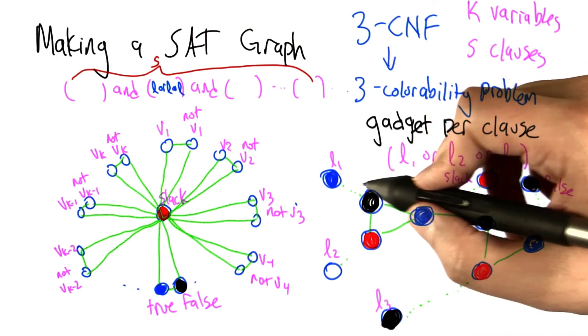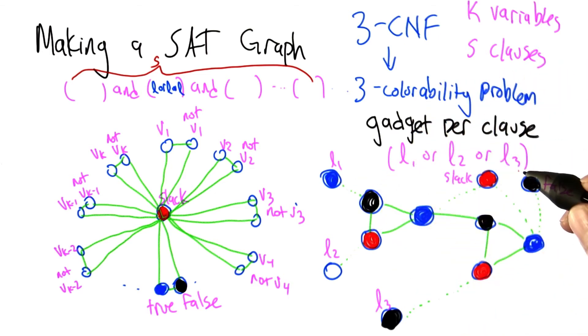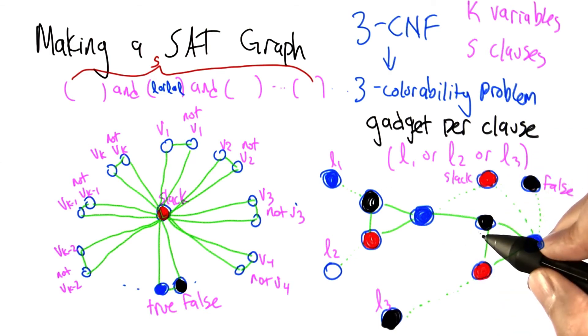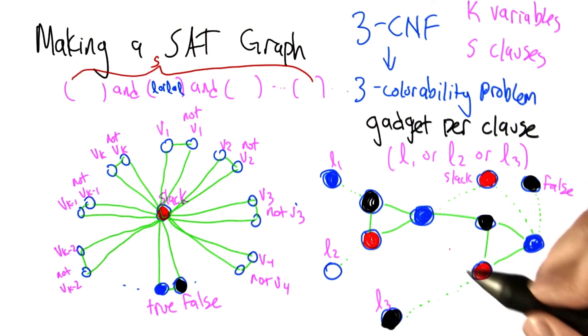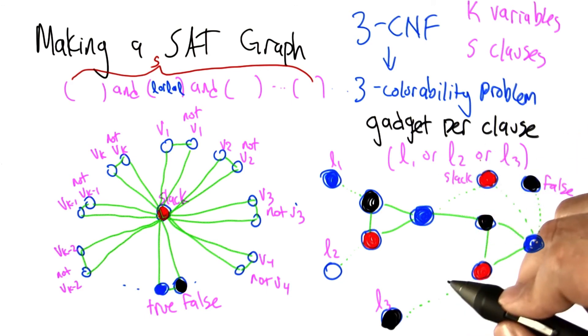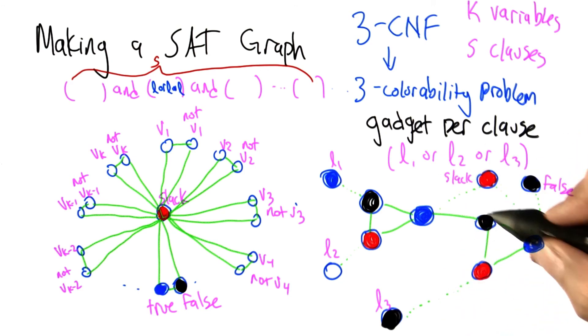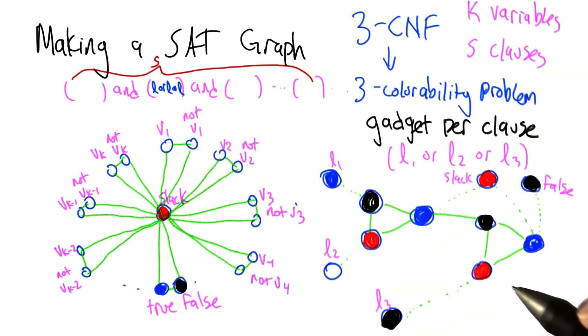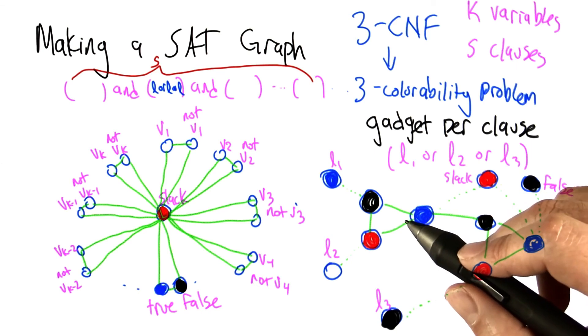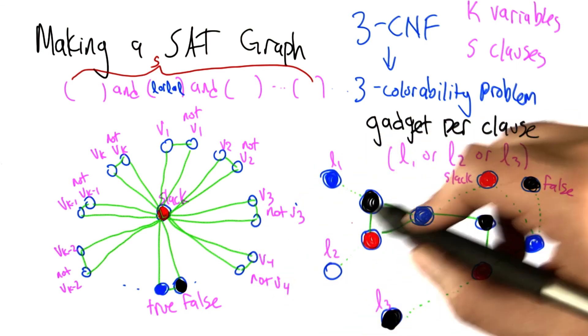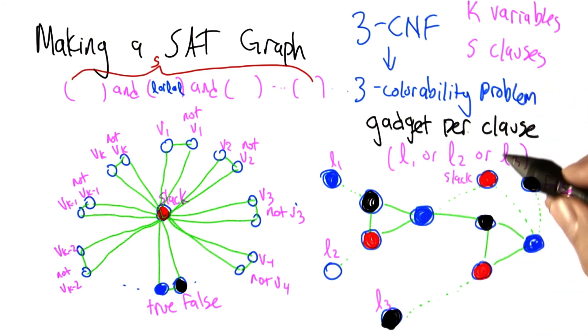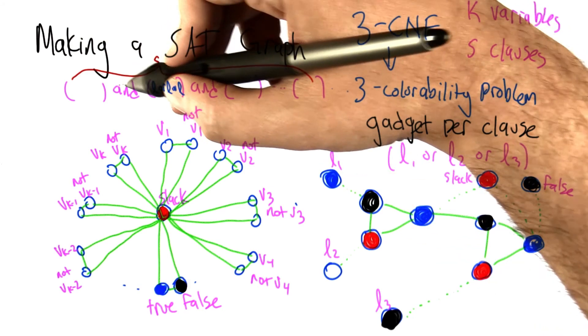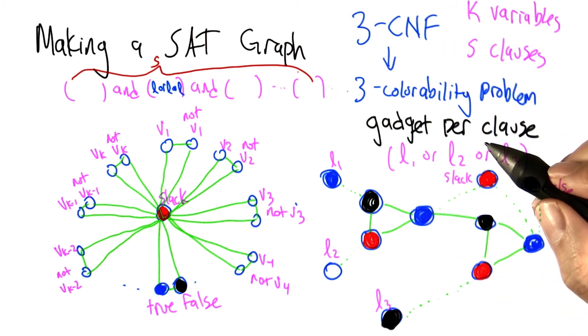So what did we just show? So this gadget for this clause is colorable as long as the three literals it's connected to are not all black. And that's great because that's exactly what the satisfiability condition is. So we create one of these gadgets for each of the clauses, connect them to the rest of the graph, and now we get this giant graph, and that whole graph is satisfied if and only if all the gadgets can be colored, which is the same as saying if and only if all the clauses can be satisfied, and since they're all connected with ands, that's exactly what we wanted it to be.